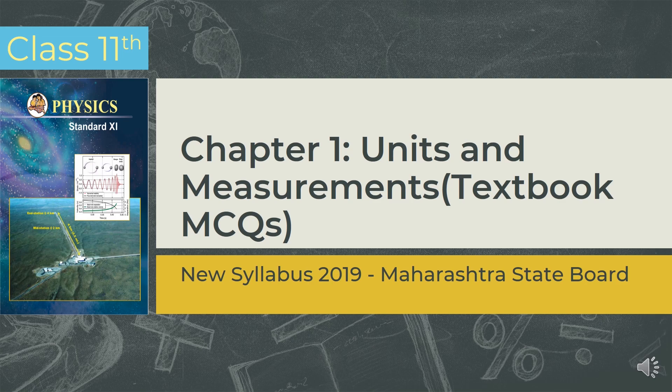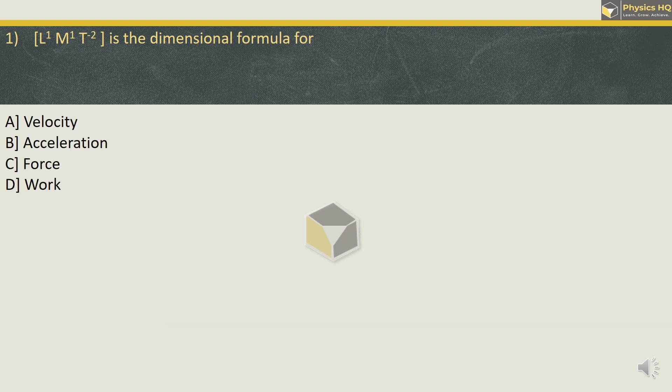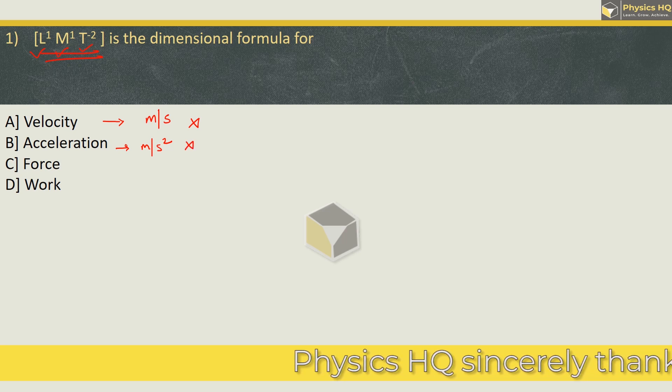Let's start with the first MCQ. L¹M¹T⁻² is the dimensional formula for velocity, acceleration, force, or work done. Over here what we see is we got length component, we got mass component and time component as well. So let us see the units of velocity. Unit of velocity is meter per second. There is no mass component over here so we can avoid this option. Next, acceleration is having unit meter per second square. Again there is no mass component so we will avoid this option also.